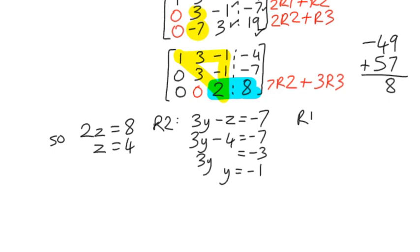And back up to row 1, which says that 1x plus 3y minus z equals negative 4. We know now that 3y is going to be negative 3. So, that becomes x minus 3, minus z, minus 4, equals negative 4. x minus 7 equals negative 4. So, x is equal to, add 7 on, x equals 3.